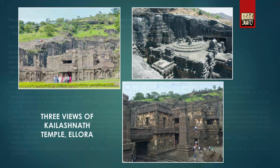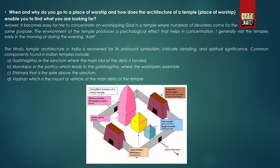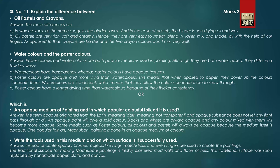These are three pictures of the Kailasanath Temple of Ellora. The second part of the question asks: when and why do you go to a place of worship, and how does the architecture of a temple enable you to find what you are looking for? The next question asks you to explain the difference between oil pastels and crayons, and the second part asks for the difference between watercolors and poster colors.